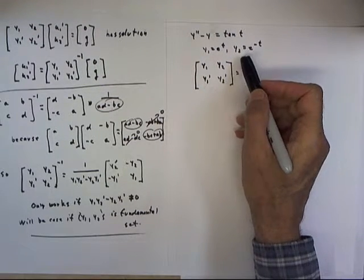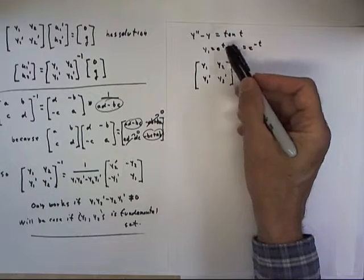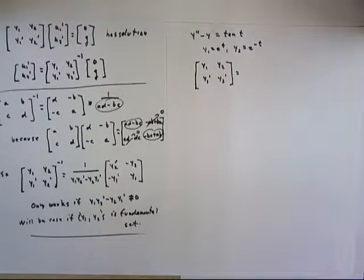y1 equals e to the t, y2 equals e to the negative t are the solutions to our characteristic equation, to the homogeneous equation.